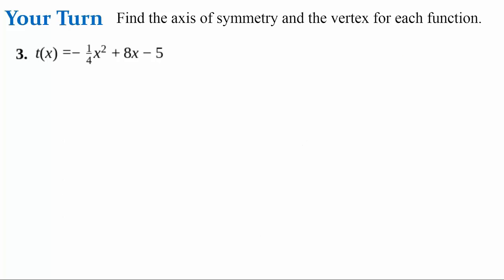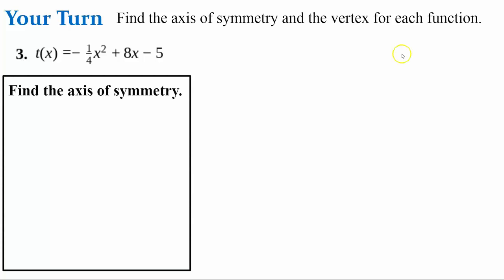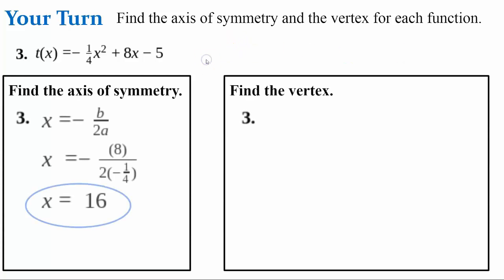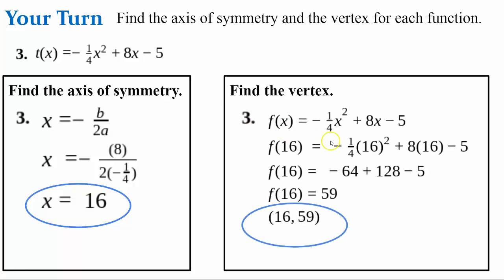Last one — go ahead and find the axis of symmetry and the vertex. Hit pause and come back when ready. Finding the axis of symmetry using x equals negative b over 2a, b equals positive 8 and a equals negative 1/4. Plugging in and evaluating, the axis of symmetry is the line x equals 16. To find the vertex, we evaluate the function at x = 16 and get the vertex as the ordered pair (16, 59).